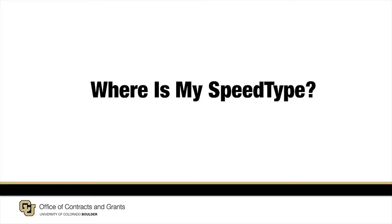Your proposal's been awarded, the sponsor sent you the notice of award, and you're ready to start the project. But you don't know where the money is or how to spend it. The Office of Contracts and Grants presents: Where's My Speed Type? A speed type is a piece of financial information that allows you to spend funds according to the awarded budget. It can take time to obtain this number, particularly for speed types involving sponsored research.